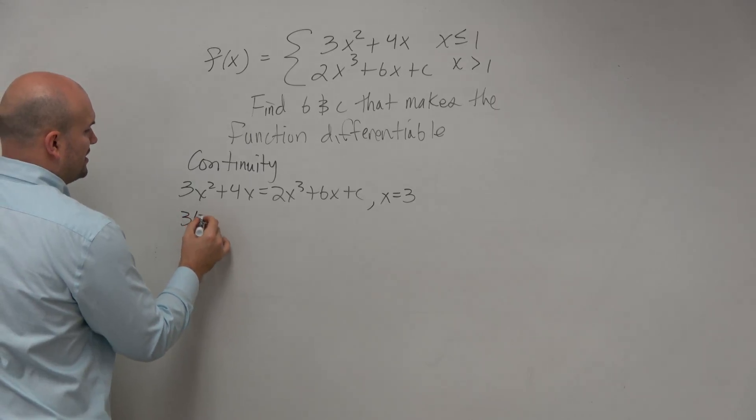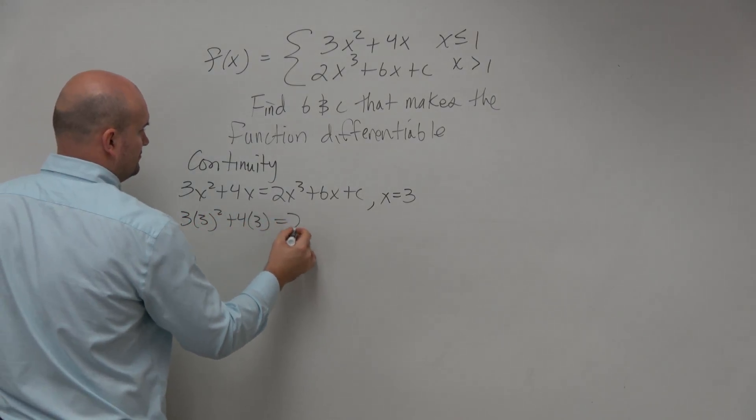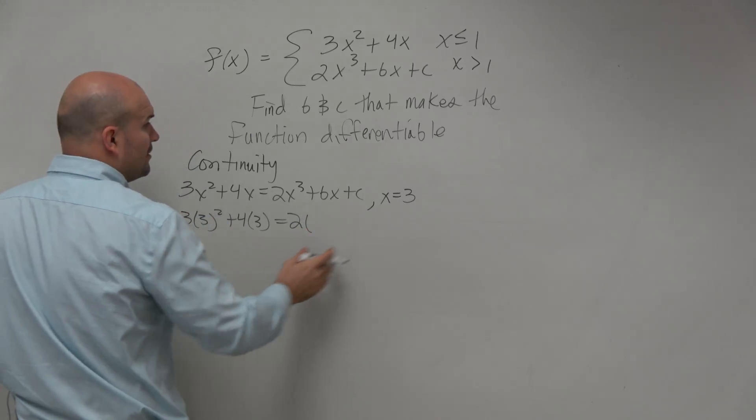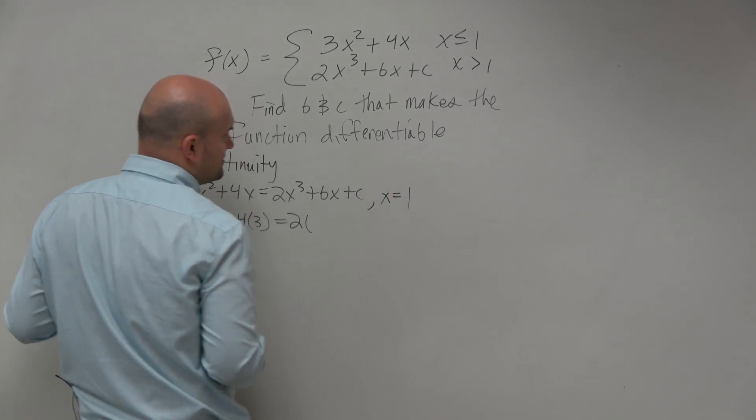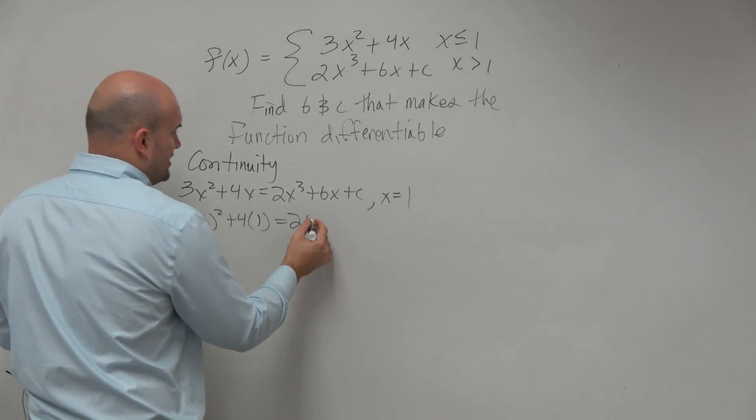So therefore, I'll just plug in 3 squared, or 3, for x. I don't know why I wrote in 1. I was thinking, yes, it has to be continuous at 1, right? That would make our numbers a lot prettier.